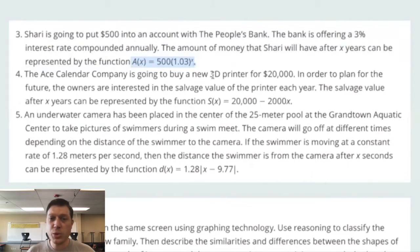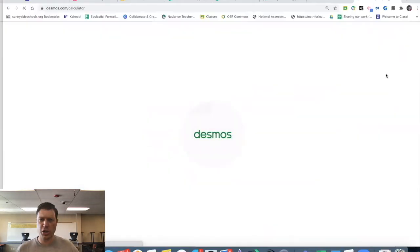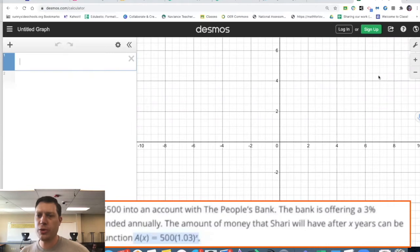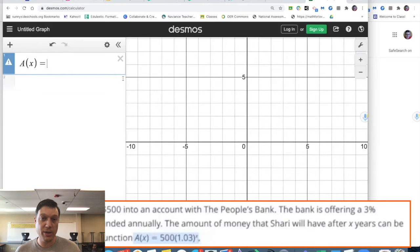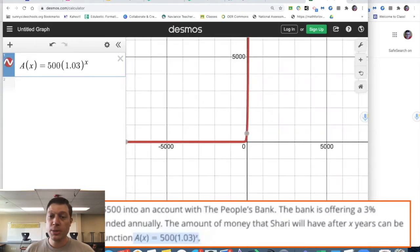Question three: Sherry is going to put $500 into an account that earns her 3% interest rate compounded annually. And this is a formula for us to know we're going to talk about this year. All of these functions are things we're going to talk about between now and June.